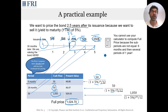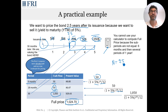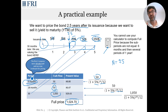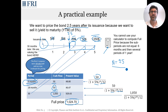Unfortunately, your calculator's TVM application cannot help you directly here. If you input N = 2.5, the calculator cannot handle periods that are unequal in length — specifically, the first period is six months and the remaining periods are one year each. Inputting N = 2.5 does not convey that information to the calculator.